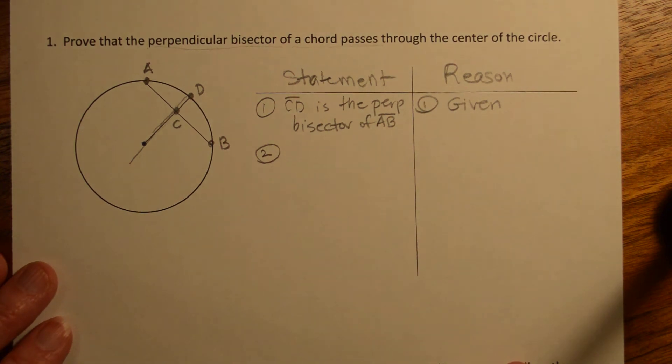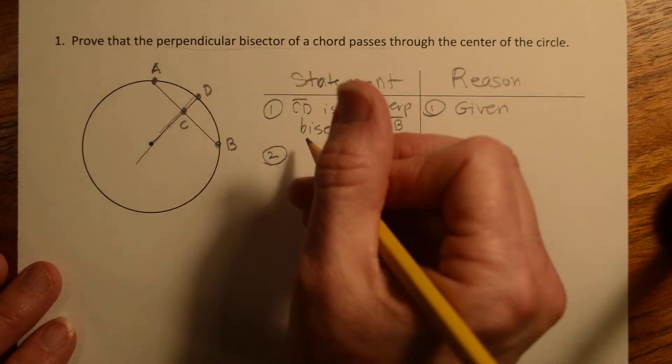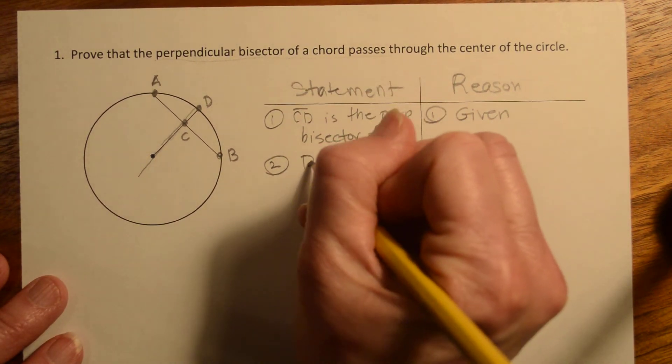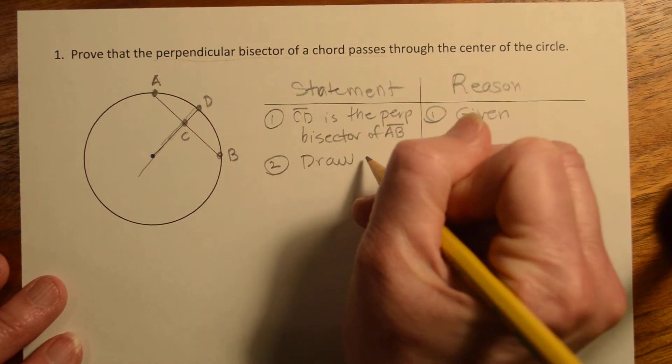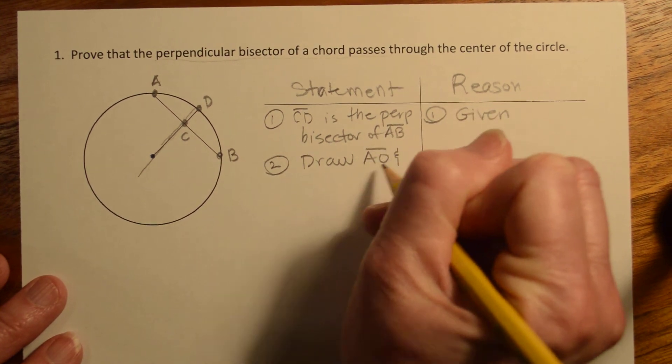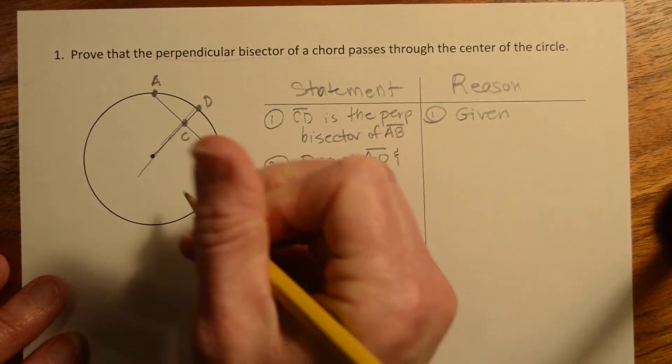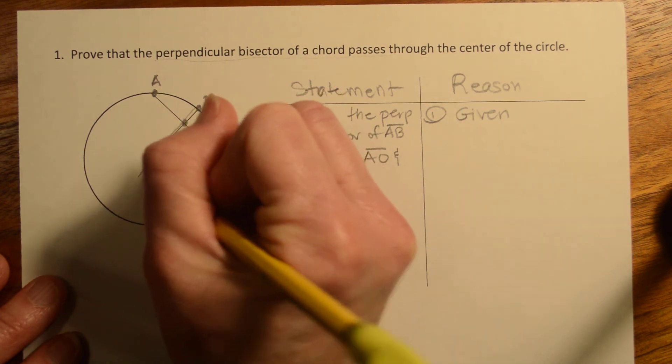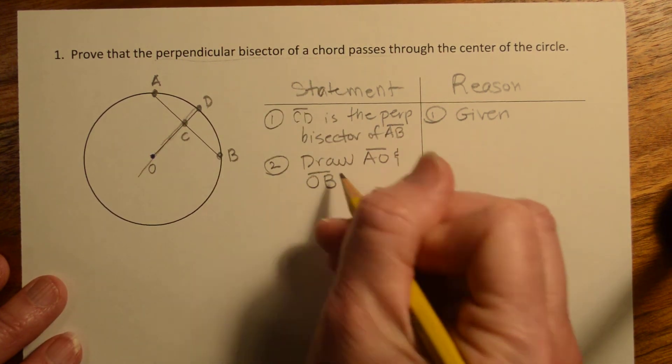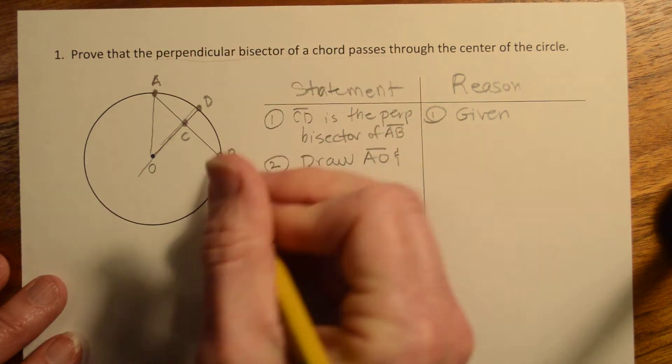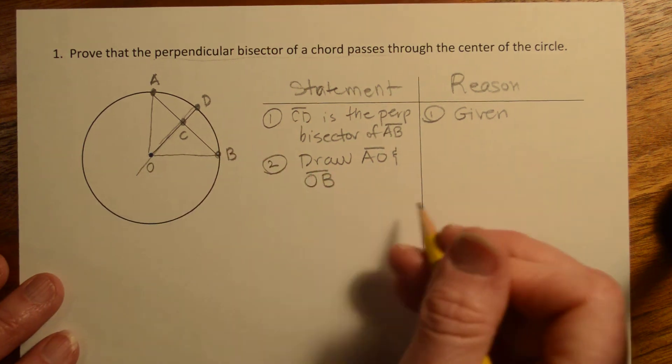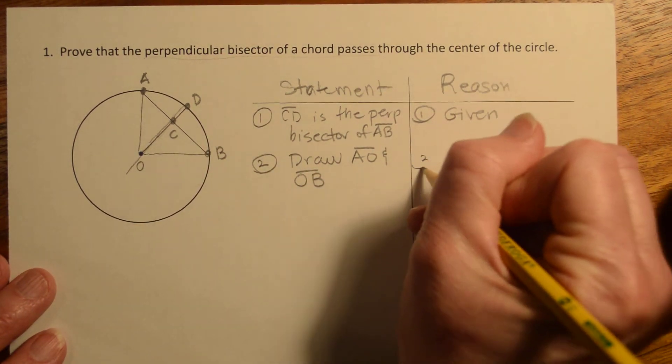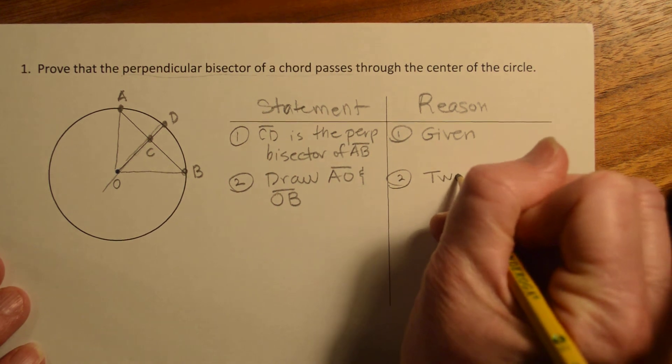All right, the next thing we're going to do, I'm going to say, he doesn't say it, but I'm going to say draw AO and OB, which do go from the center of the circle out to the edge. Again, sometimes he does this, sometimes he doesn't, but we're going to do it this time. And the reason is two points determine a line.